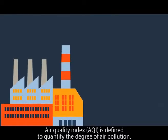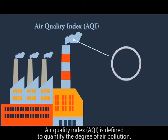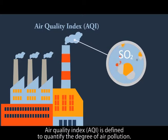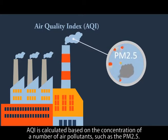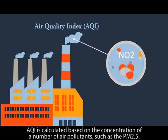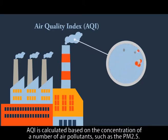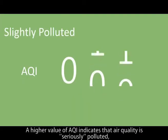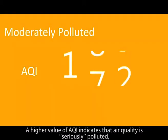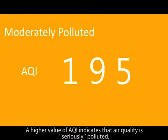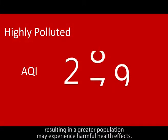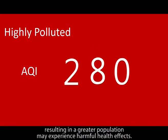Air Quality Index is defined to quantify the degree of air pollution. AQI is calculated based on the concentration of a number of air pollutants such as PM2.5. A higher value of AQI indicates that air quality is seriously polluted, resulting in a greater population experiencing harmful health effects.